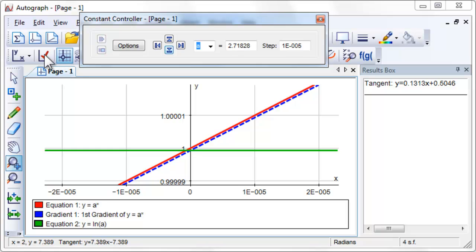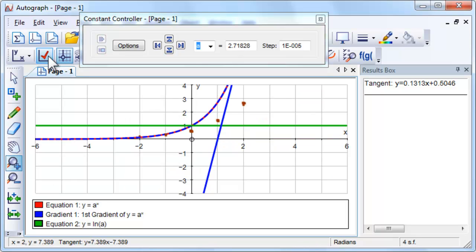What is the value of a to four decimal places? What is the value of log a for this value of a? Set a equals e in the constant controller.